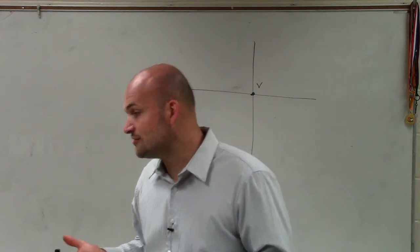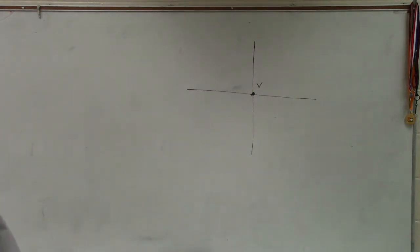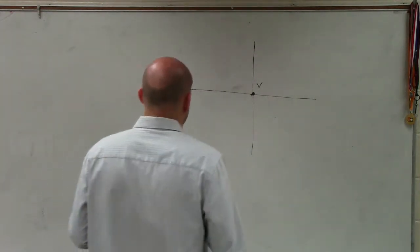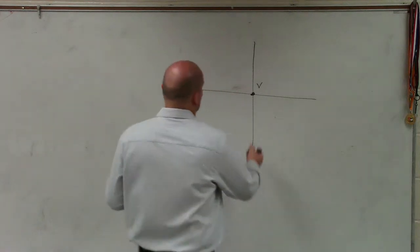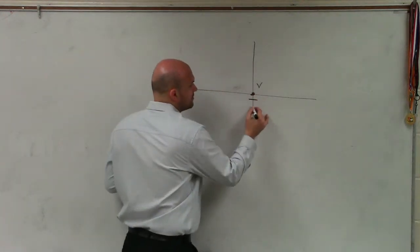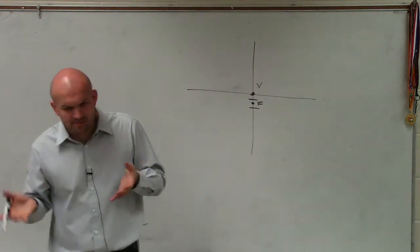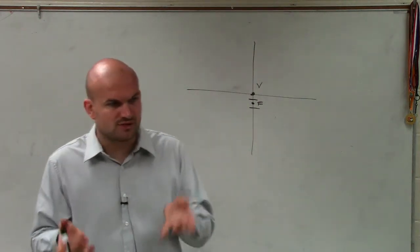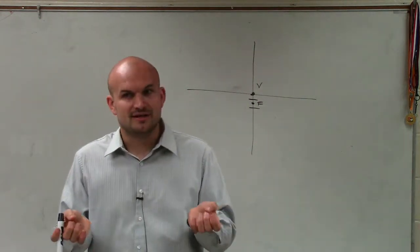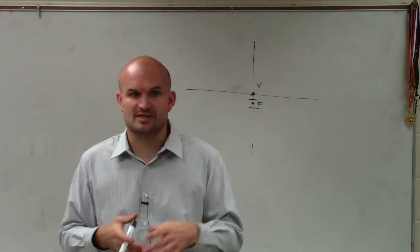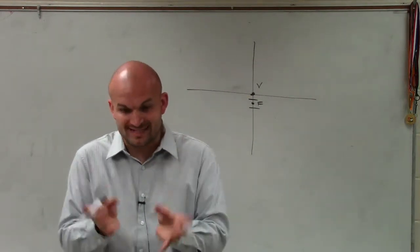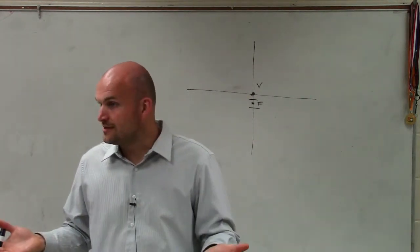Since we know the vertex is at (0, 0), do we know any other information? It does provide us with the focus, and the focus they say is at (0, negative 3 halves). So that's the focus down at negative 3 halves. Now remember, think about where the focus is related to the shape of the parabola — was it to the left, to the right, above it, inside of it? It was inside of it.